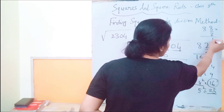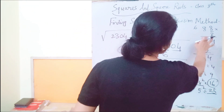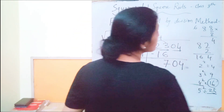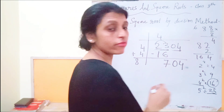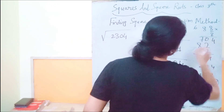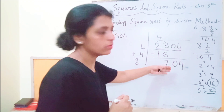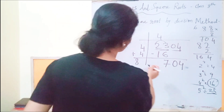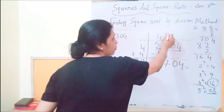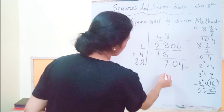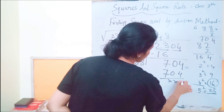Eight eights are sixty-four, and sixty-four plus the 6 (from carrying) gives us 704. So 88 times 8 equals 704. We got exactly 704 — remainder zero. So we placed 8 next to 8, and 88 multiplied by 8 gave us 704.